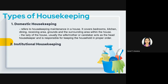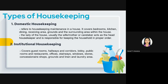The second type of housekeeping is institutional housekeeping, which applies to housekeeping maintenance in commercial lodging establishments like hotels, resorts, and apart-hotels. It covers guest rooms, hallways, corridors, lobby, public rooms, restaurants, offices, stairways, windows, stores, concessionaire shops, grounds, and linens. It does not include the kitchen and dining area, since these are handled by the food and beverage section.